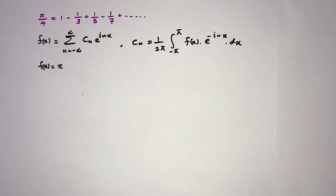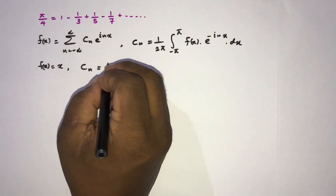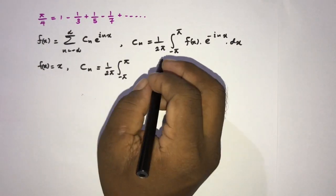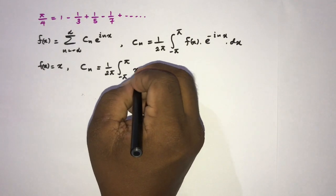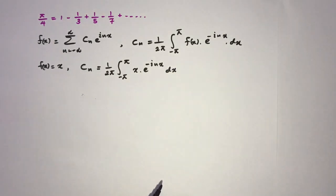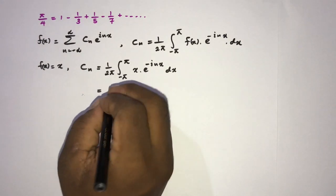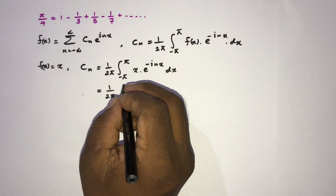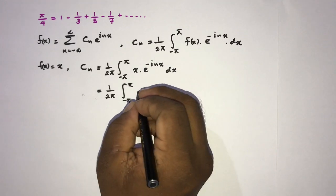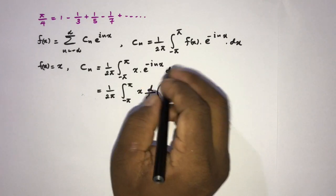With f(x) equal to x, c_n is equal to 1 over 2π times the integral from minus pi to pi of x times e to the minus inx dx. To evaluate this integral we can use IBP — integration by parts. I am going to rearrange this integral: as the first function I take x, then the derivative, then the integration of e to the minus inx.